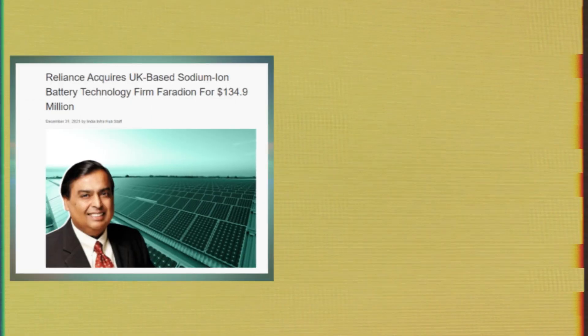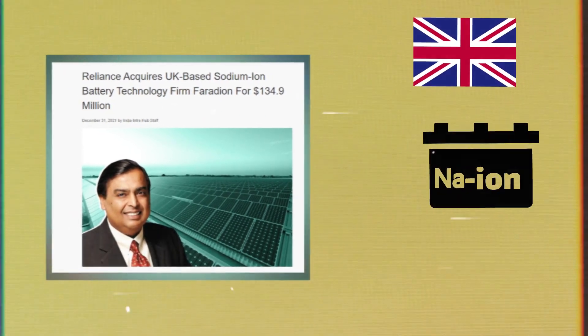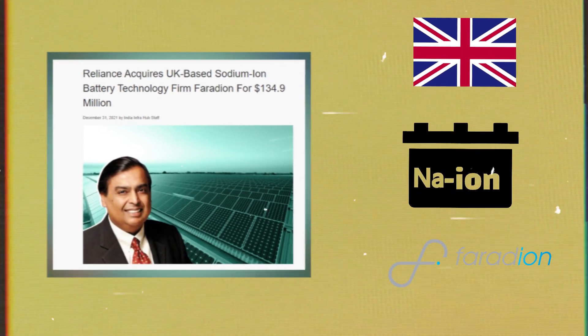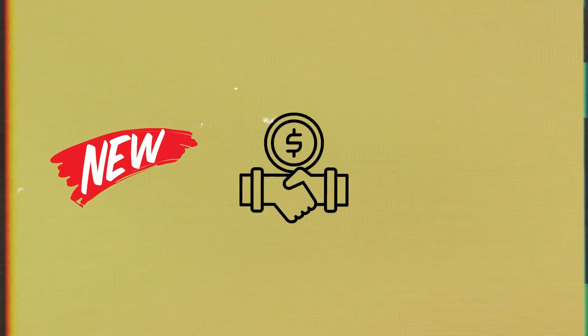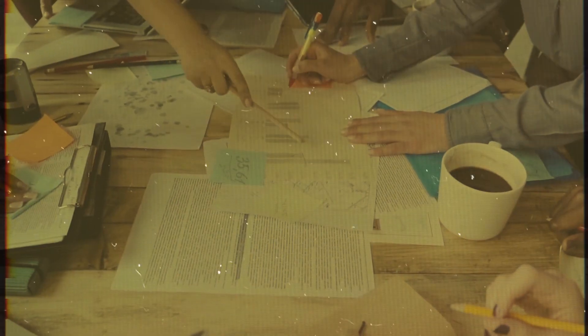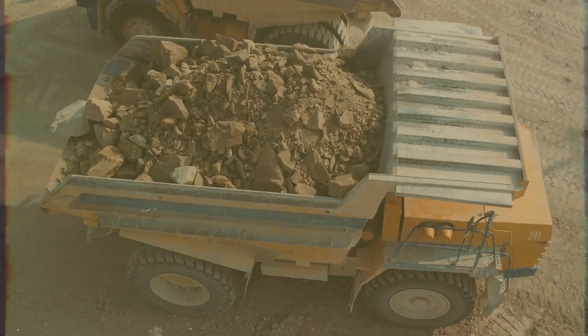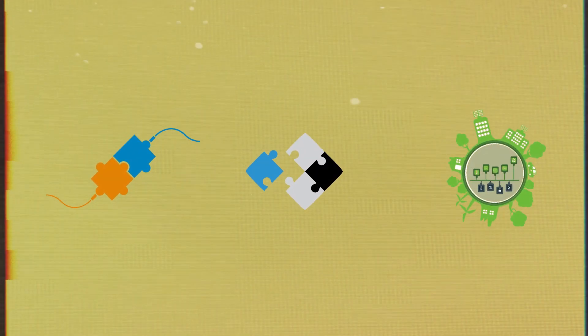At the end of 2021, Reliance Industries have moved towards acquiring a UK-based sodium-ion battery producer Faradion for about $136 million. This is the latest acquisition by Reliance in the field of renewable energy. This is a critical step for the conglomerate to incorporate all the steps and raw materials for integrating all the parts of the new energy ecosystem.